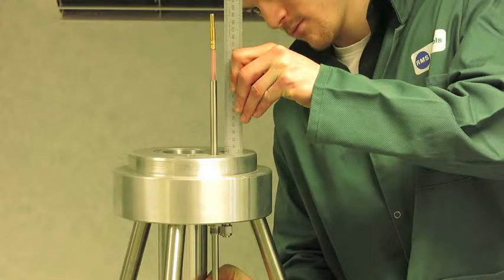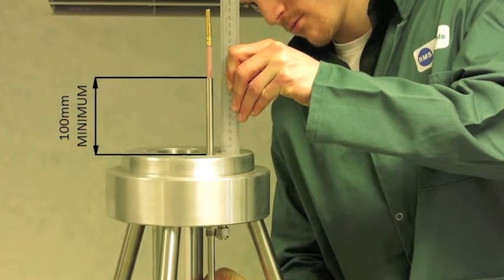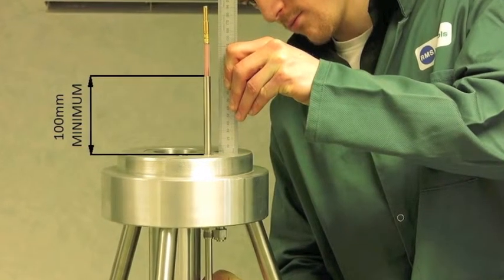When installing the lower breakout into the packer or can hanger, there must be a minimum distance of 100 mm between the end of the 3/8 inch metal tubing and the top face of the packer or can hanger.